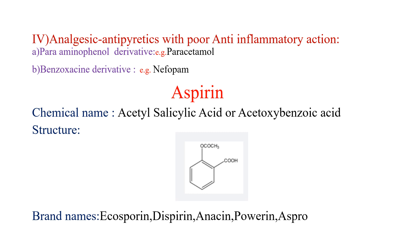Fourth: Analgesic-antipyretic agents with poor anti-inflammatory action. These agents reduce pain sensation and reduce elevated body temperature. Subclasses: A) Para-aminophenol derivatives, e.g., paracetamol. B) Benzoxazine derivatives, e.g., nefopam. If we have questions, write the chemical structure, chemical name, brand name, and uses of aspirin.